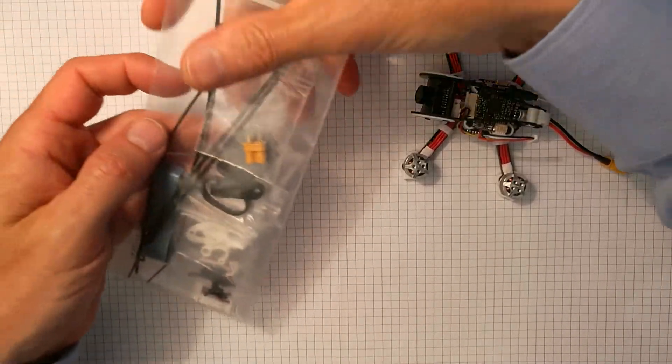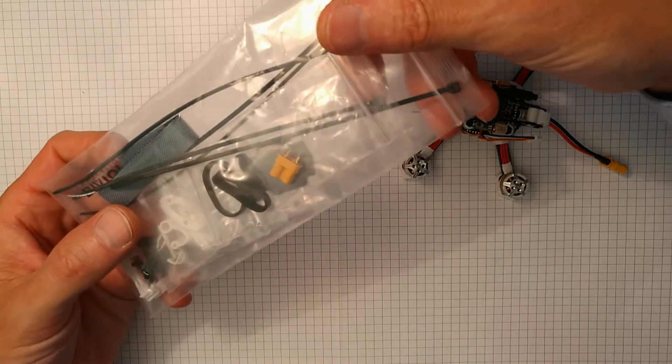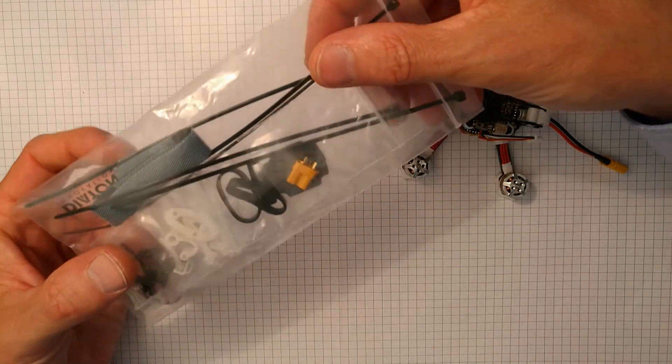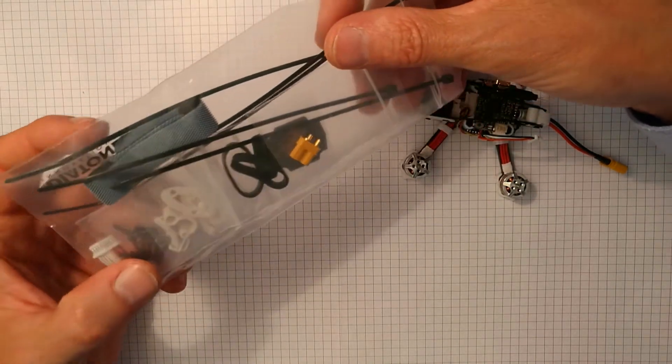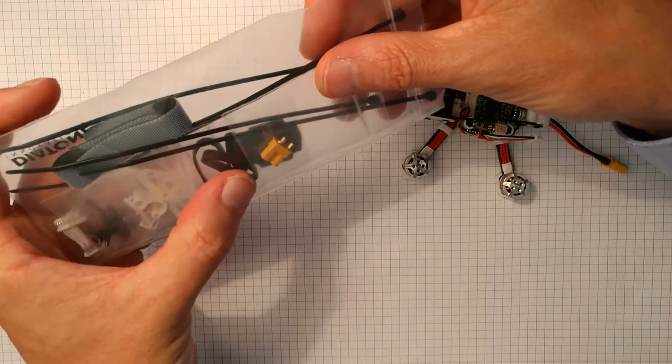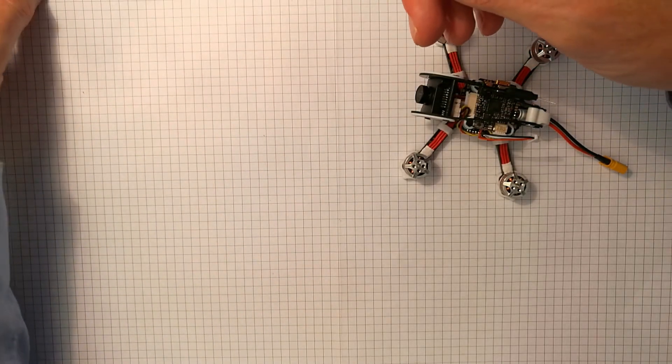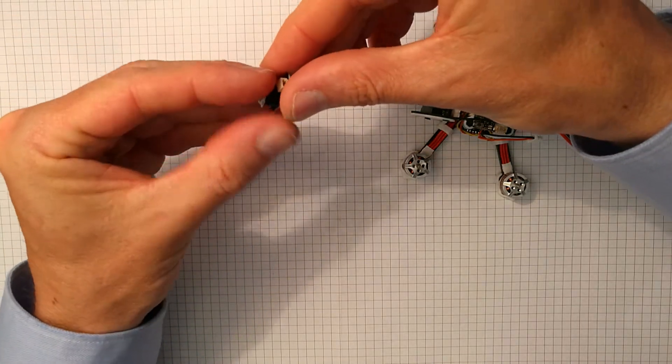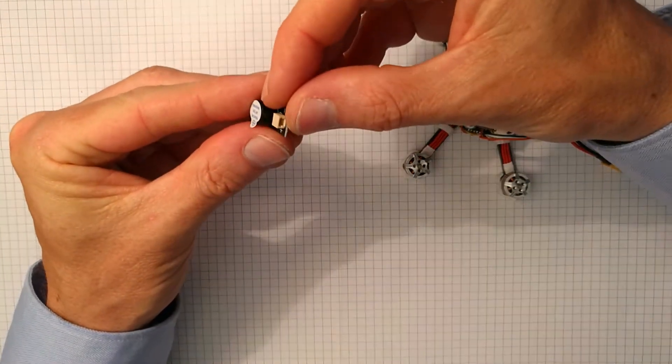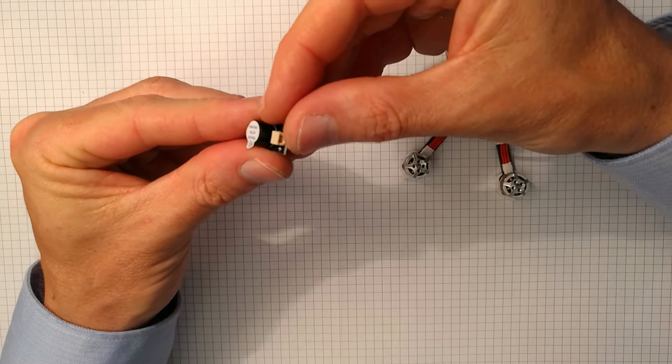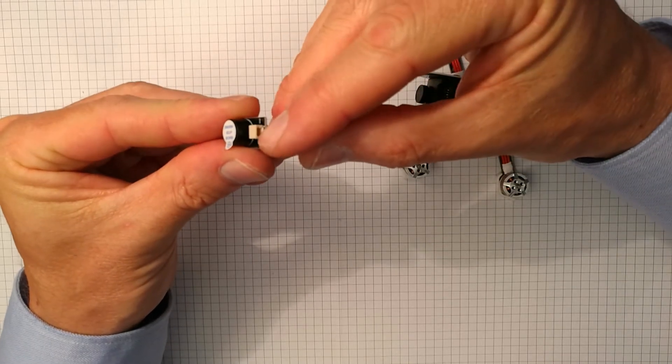In a second bag, we find the usual goodies like extra zip ties, spare screws and rubber bands and so on. But most interestingly, Diatone includes a buzzer now, which was an ongoing customer request.